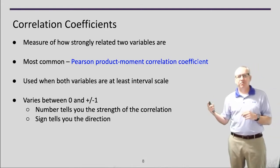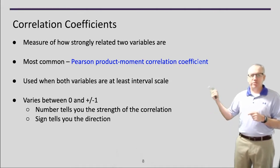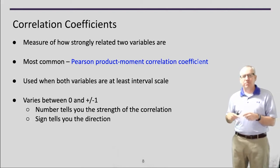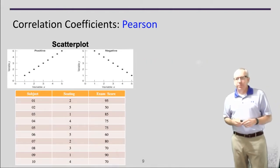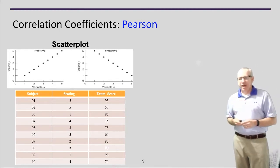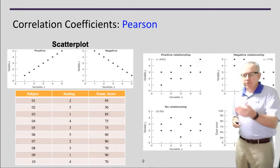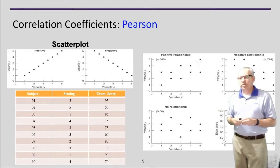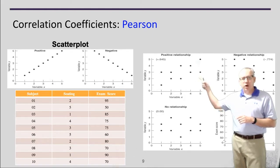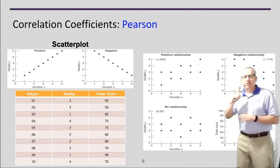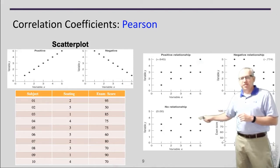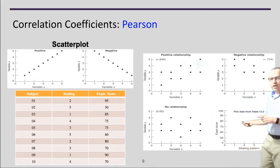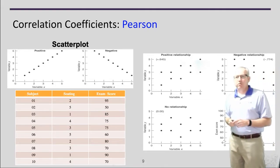A positive one means they're very strongly correlated in the same direction — when one goes up, so does the other. A negative one means they're strongly correlated inversely — when one goes up, the other goes down. On a scatter plot, a positive correlation looks like an upward trend and a negative correlation looks like a downward trend. The top-left example shows a positive correlation with some scatter; another shows a negative correlation going down with some scatter; and one with no pattern shows no relationship.